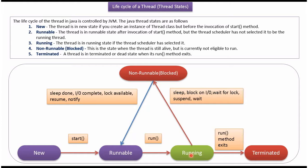If the thread scheduler selects the thread, then the thread will be in the running state. From the running state, the thread can go to the terminated state if the run method exits. From the running state, the thread can also go to the non-runnable or blocked state. In this state, the thread is still alive but not eligible to run.